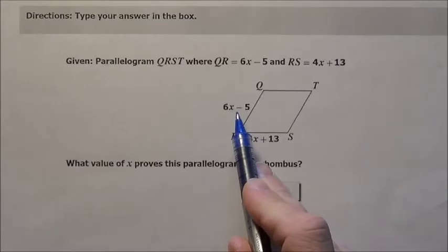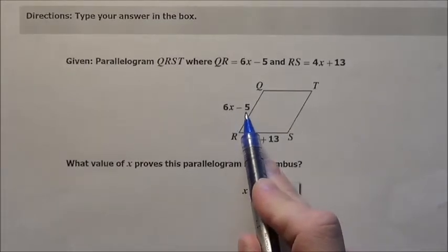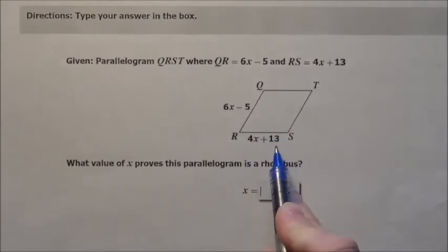So basically if it's going to be a rhombus, I need this side QR, which is represented by 6x minus 5, to equal this side RS that's represented by 4x plus 13.